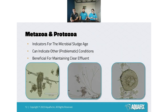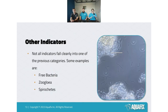Metazoa and protozoa can help tell us the sludge age. For example, tardigrades indicate a higher sludge age. Metazoa and protozoa can also indicate other issues — for instance, a stalked ciliate colony missing their heads is a sign of unfavorable conditions such as mild toxicity. Aside from providing those indicators, metazoa and protozoa are beneficial because they help maintain a clean, clear effluent.